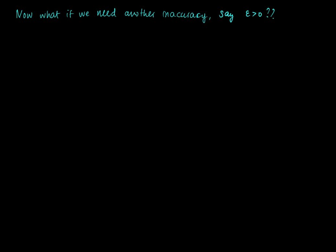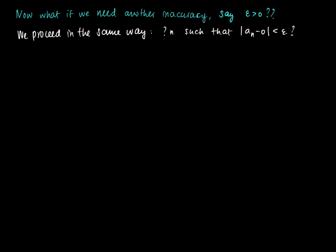We can debate whether 10^(-3) is the desired accuracy. What if we need another accuracy — say some number epsilon greater than 0? We can proceed in the same way: we ask for what n does it hold that |a_n - 0| is smaller than the desired accuracy epsilon. We try to solve the inequality |a_n - 0| ≤ epsilon.